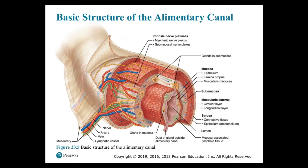Figure 23.5 shows the basic structure of the alimentary canal with the four basic tunics: the mucosa (epithelium, lamina propria, and muscularis mucosae), the submucosa, the muscularis externa (circular and longitudinal muscle layers), and the serosa — made up of connective tissue and mesothelium, a single layer of squamous epithelium. In the esophagus, the serosa is replaced by a fibrous adventitia — dense connective tissue that holds the esophagus to surrounding structures.